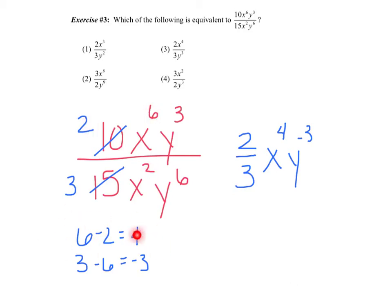So when I go get my final answer, again, I'm just going to say if you're negative, I'm going to boot you to the bottom. x to the fourth stays on top. y cubed to the bottom. And if I look at my choices, let's see, I need a two-thirds, which kills that one and that one. I need an x to the fourth on top and y cubed. Hopefully you've gone with choice 3.